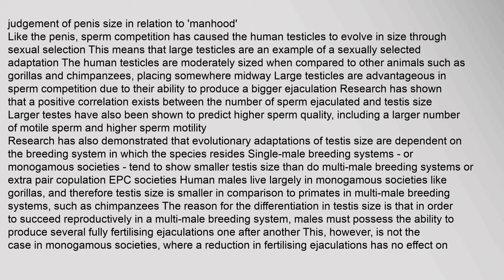Like the penis, sperm competition has caused the human testicles to evolve in size through sexual selection, making large testicles a sexually selected adaptation. The human testicles are moderately sized compared to other animals such as gorillas and chimpanzees. Large testicles are advantageous in sperm competition due to their ability to produce a bigger ejaculation. Research has shown a positive correlation between the number of sperm ejaculated and testes size, and larger testes also predict higher sperm quality including greater sperm motility.